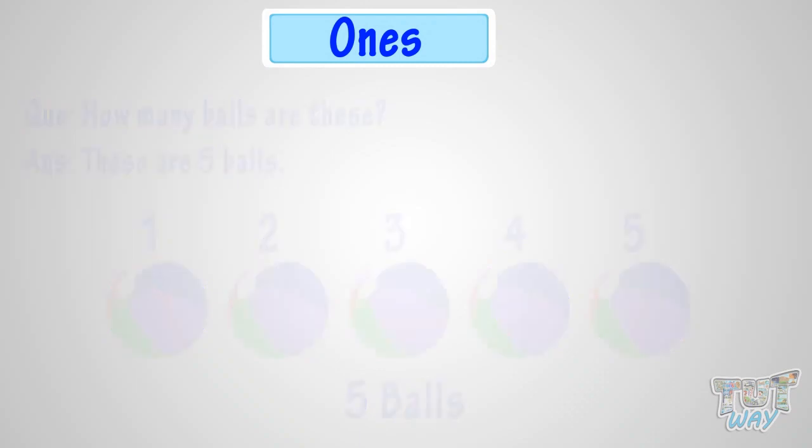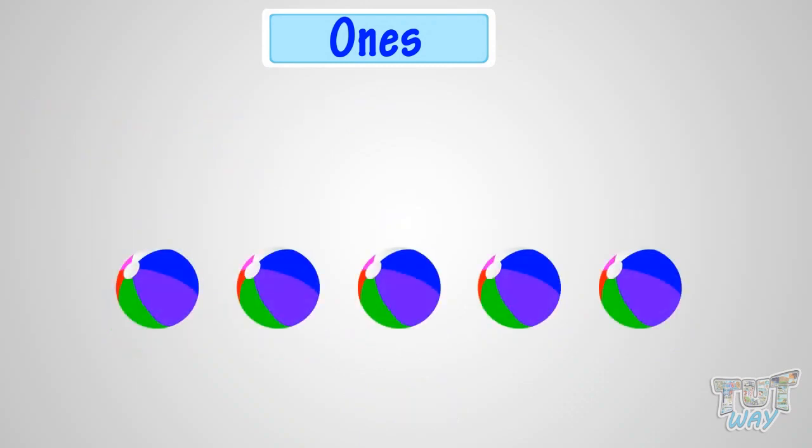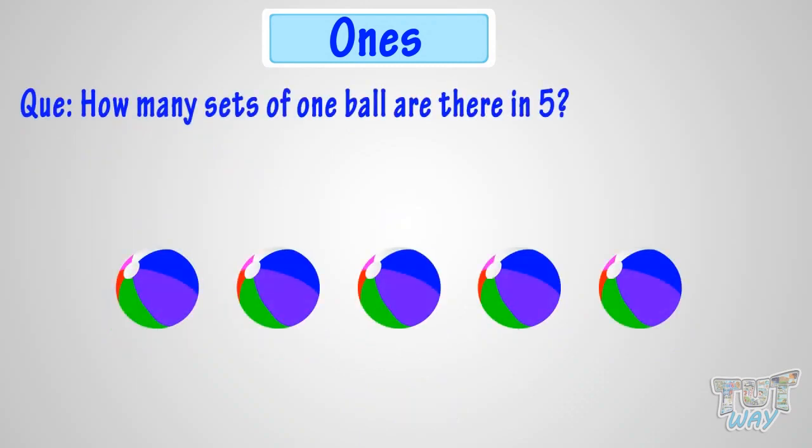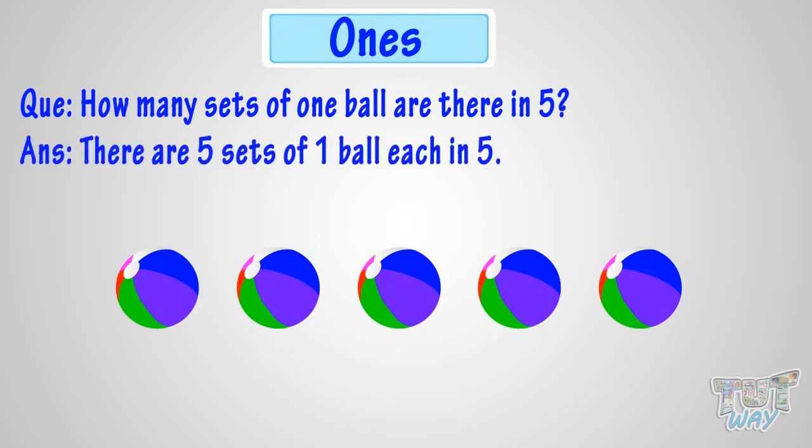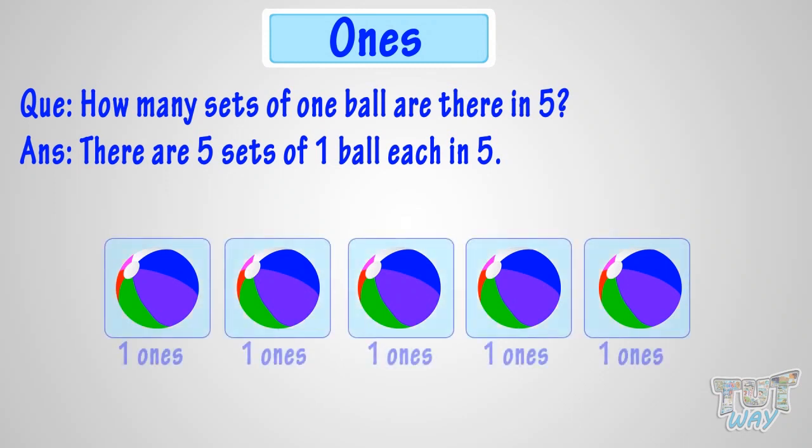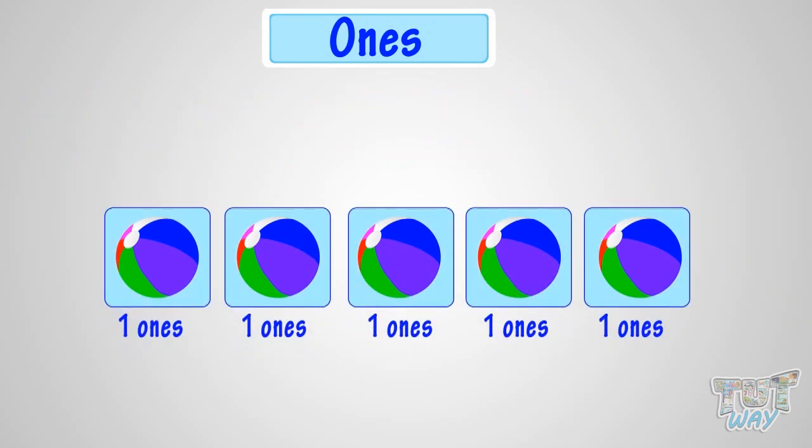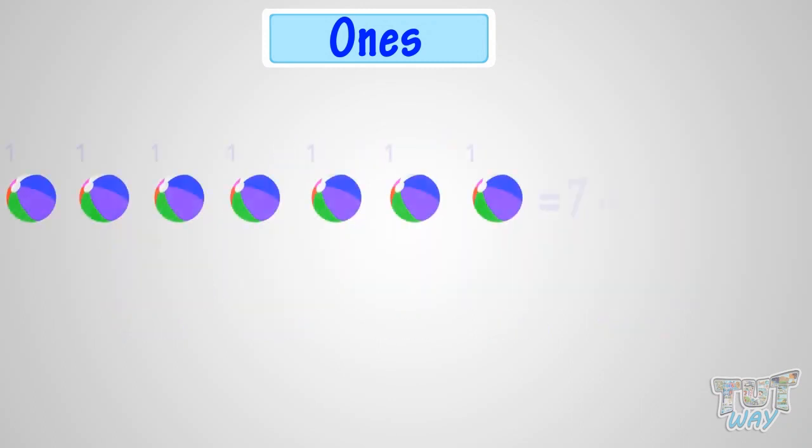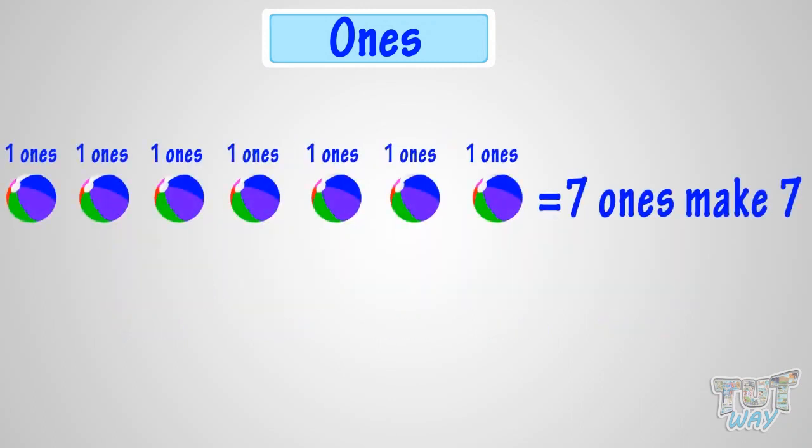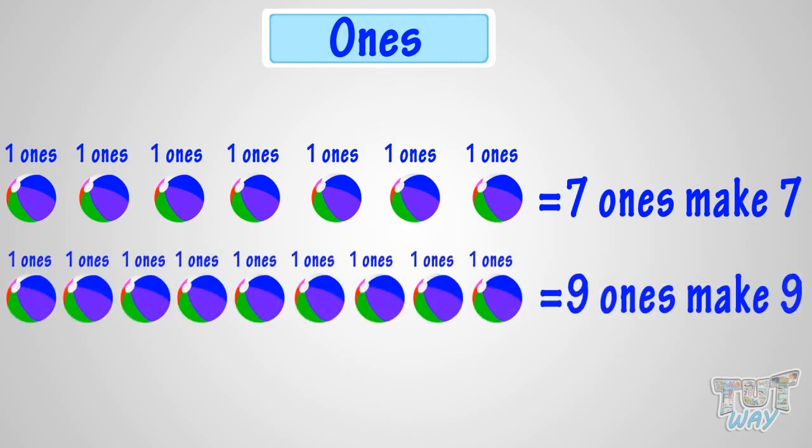So, how many sets of one ball are there in five? Yeah! There are five sets of one ball each in five. Or, five ones make five. Similarly, seven ones make seven. Nine ones make nine.